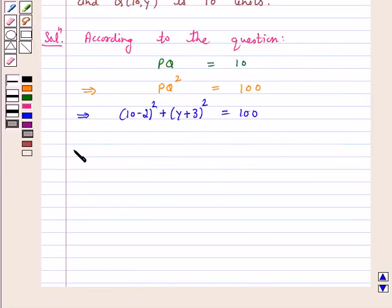This implies 64 plus y² plus 6y plus 9 is equal to 100.